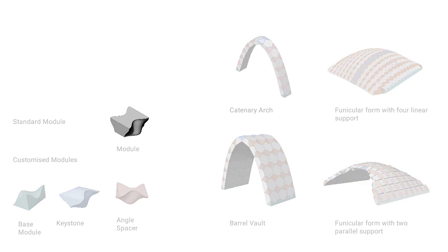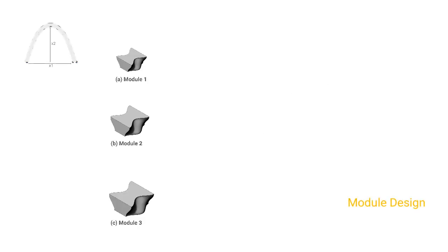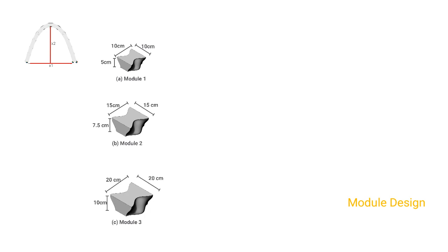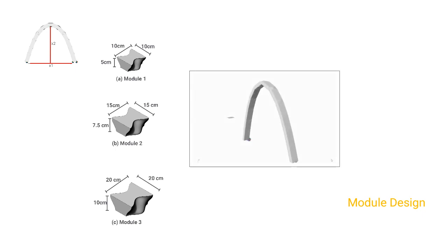The size of the module can vary based on span, rise, or curvature. To find the optimum size for a 300 cm span and rise, three proportionately scaled iterations were worked out: 10×10×5 cm, 15×15×7.5 cm, and 20×20×10 cm.